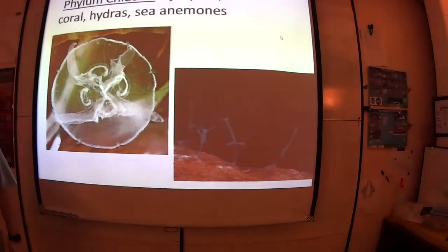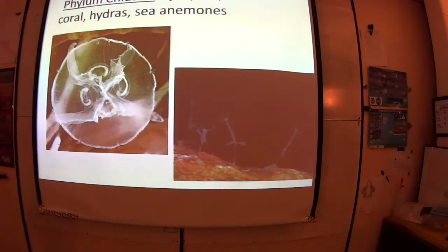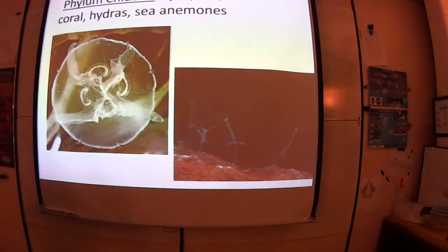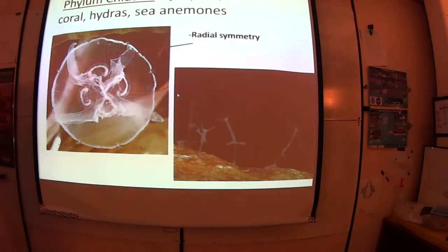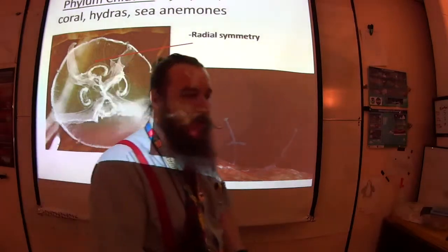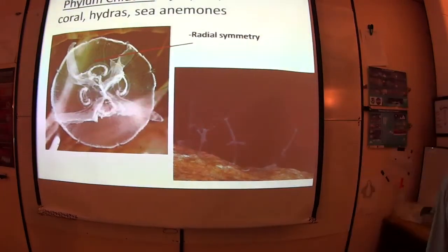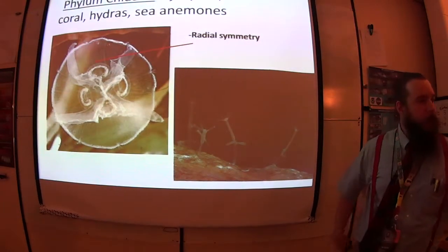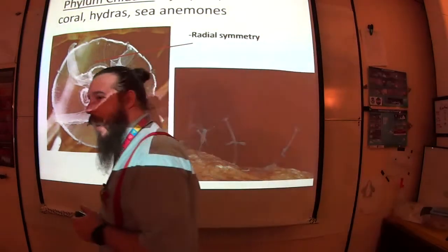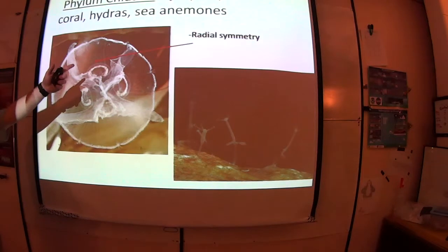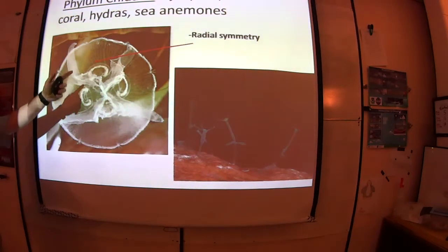Let's begin looking at Cnidaria. What kind of symmetry do they have? Radial symmetry. They have radial symmetry. Bilateral symmetry means one line of symmetry cutting us into two sides. How many lines of symmetry do they have in radial symmetry? Infinite — just like a circle has an infinite number of radii, which is the plural of radius. See how it's radial? It means it's round.